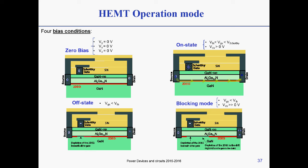Before continuing, I want to spend a few more minutes on the structure and operation mode. When you have a channel already formed, you need to apply a negative bias to deplete the negative charge underneath. We apply a negative bias on the gate to switch it off. This depletes the channel beneath the gate contact and cuts the connection between the two-dimensional electron gas present from the gate to the source and the one between the gate and the drain. So for any drain voltage applied, you shouldn't see any current flowing in the device, unless it's leakage current.